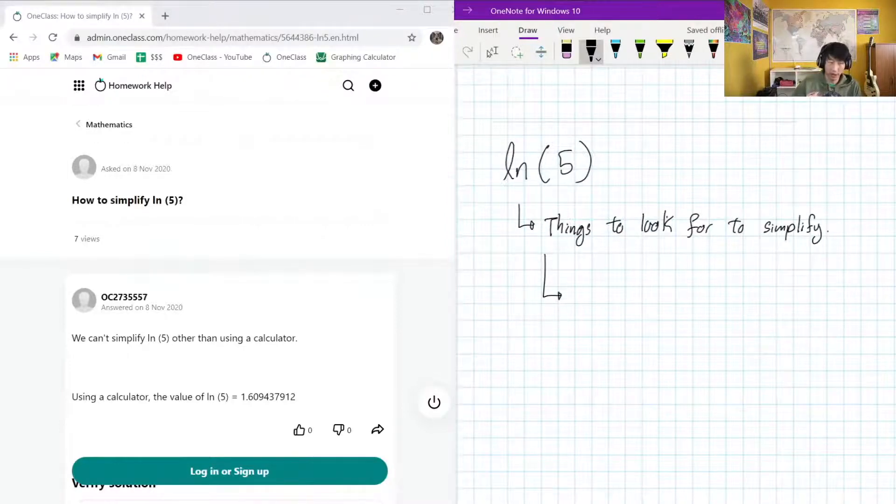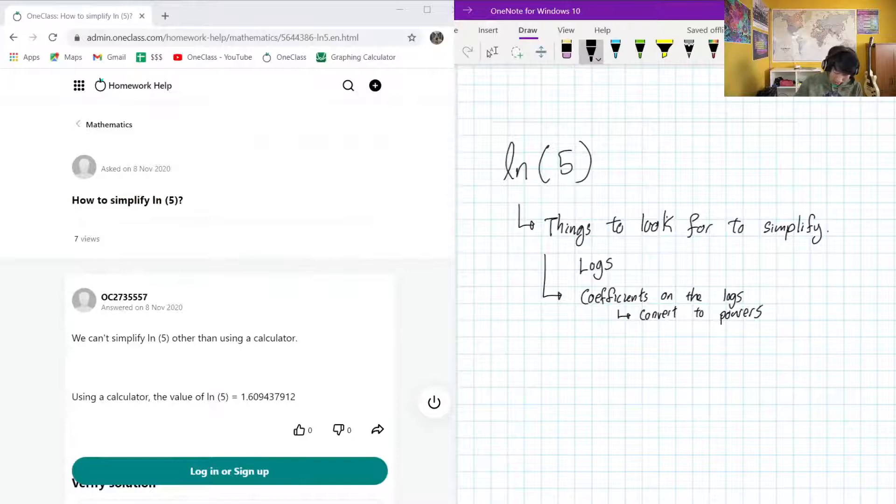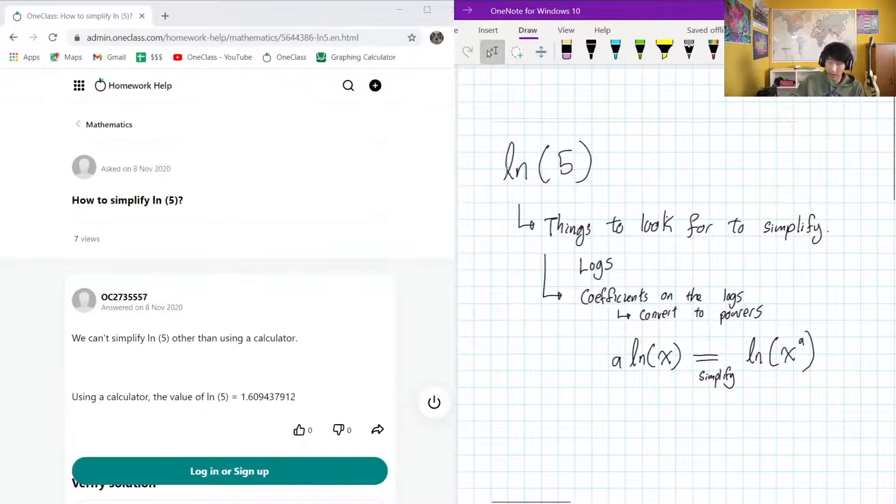We want to look for coefficients on the logs. And when we see a coefficient, we want to convert to powers. So suppose we have a ln(x), we want to simplify to make it just ln of x with x to the power of a. We want to move those coefficients to the power.